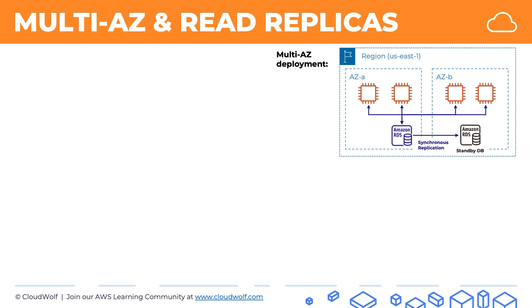You have two options when setting up this standby database: you can select an instance standby or a cluster standby deployment. With the instance type, you get exactly one standby database which you cannot use for anything else — it's just there storing data in case something happens to the original database, and if something does happen, everything switches over to the standby very quickly. If you select cluster, you get two standby instances in different availability zones, and both of them support read workloads. So your EC2 instances will be able to read data from these standby databases, though they won't be able to write data into them.